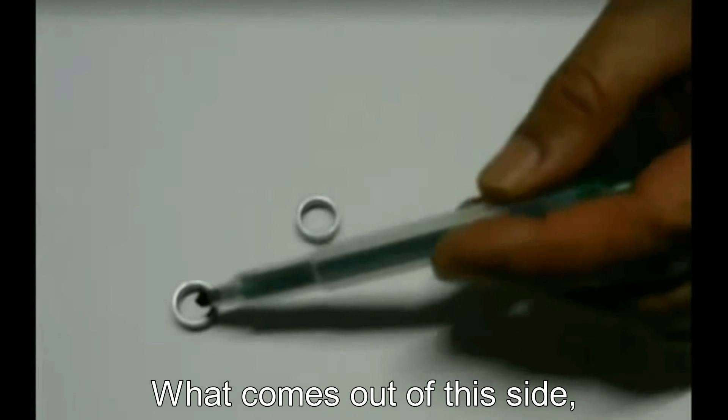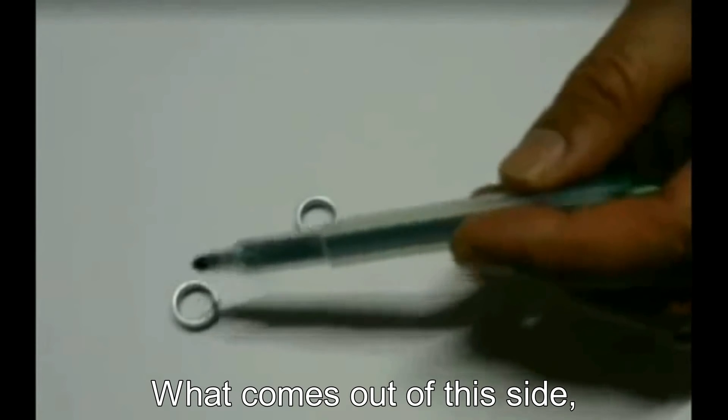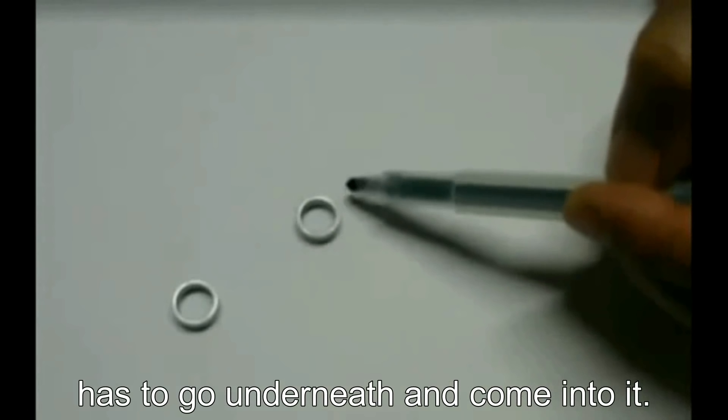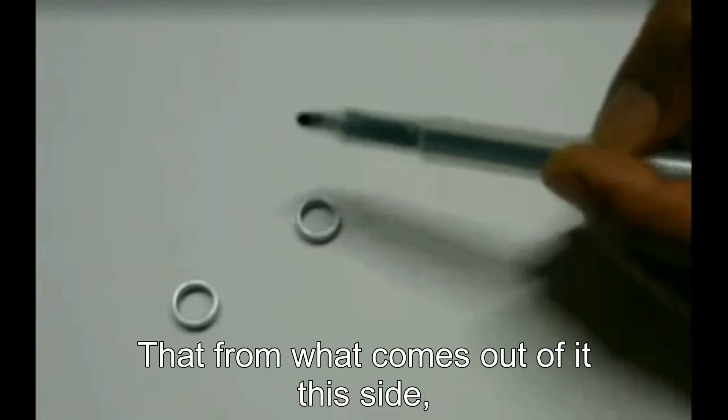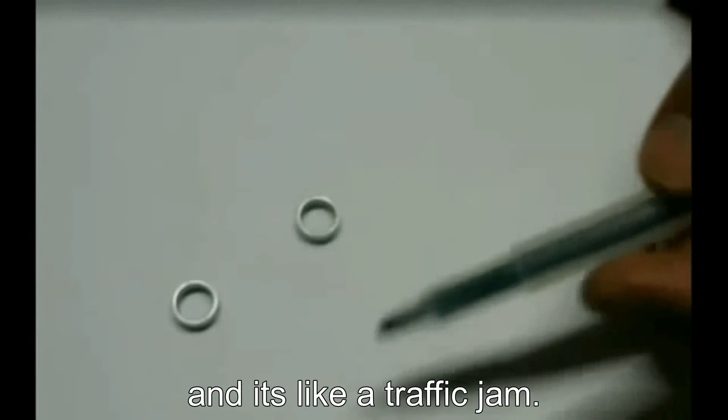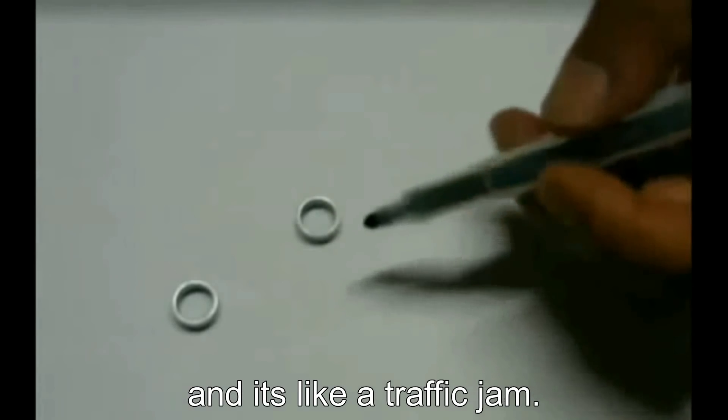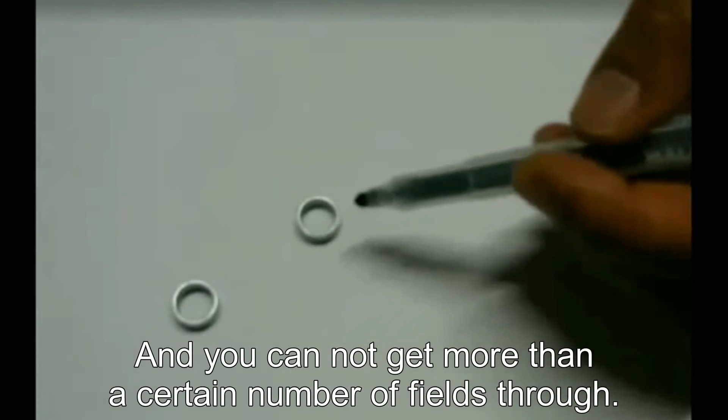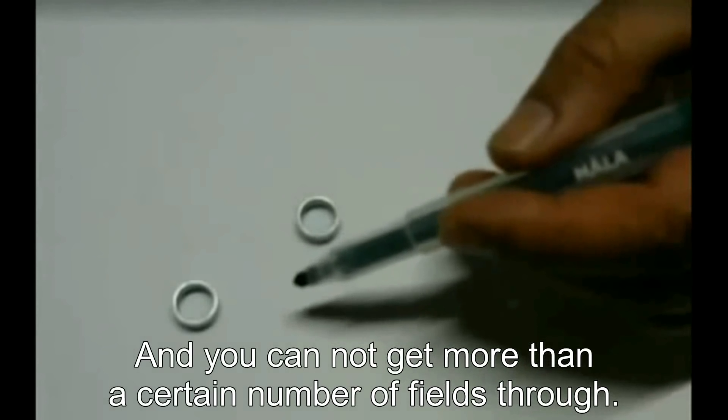Now, what comes out of this side has to go underneath and come into it. That from what comes out of it, this side, which goes back in there. And it's like a traffic jam. You cannot get more than a certain number of fields through.